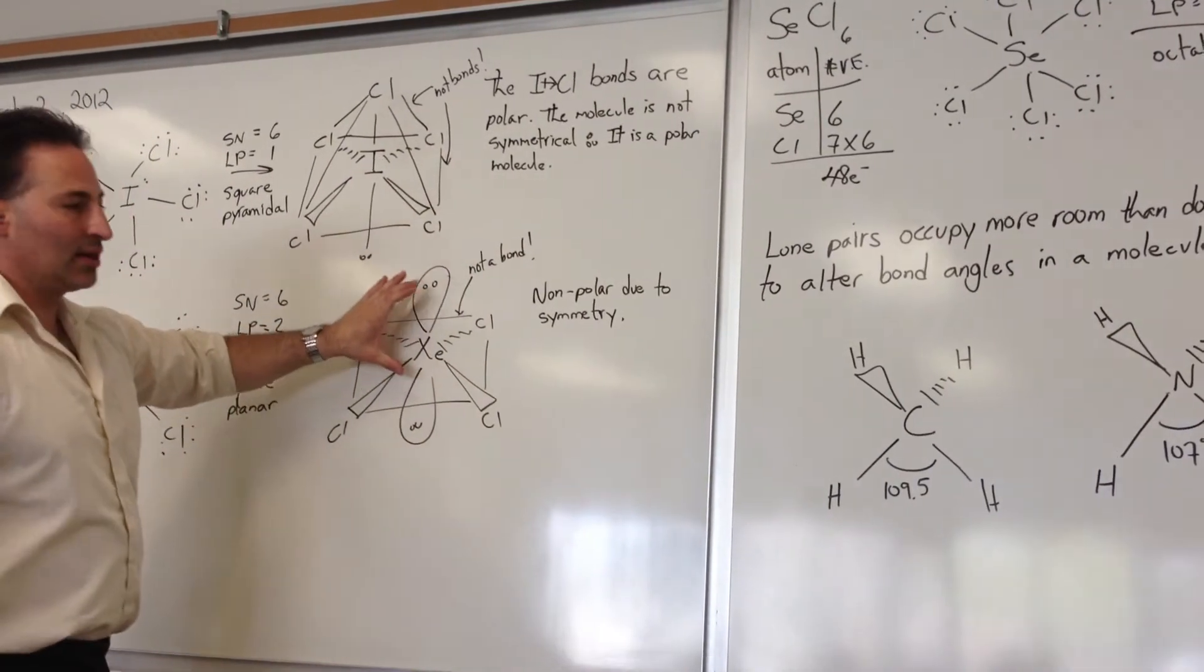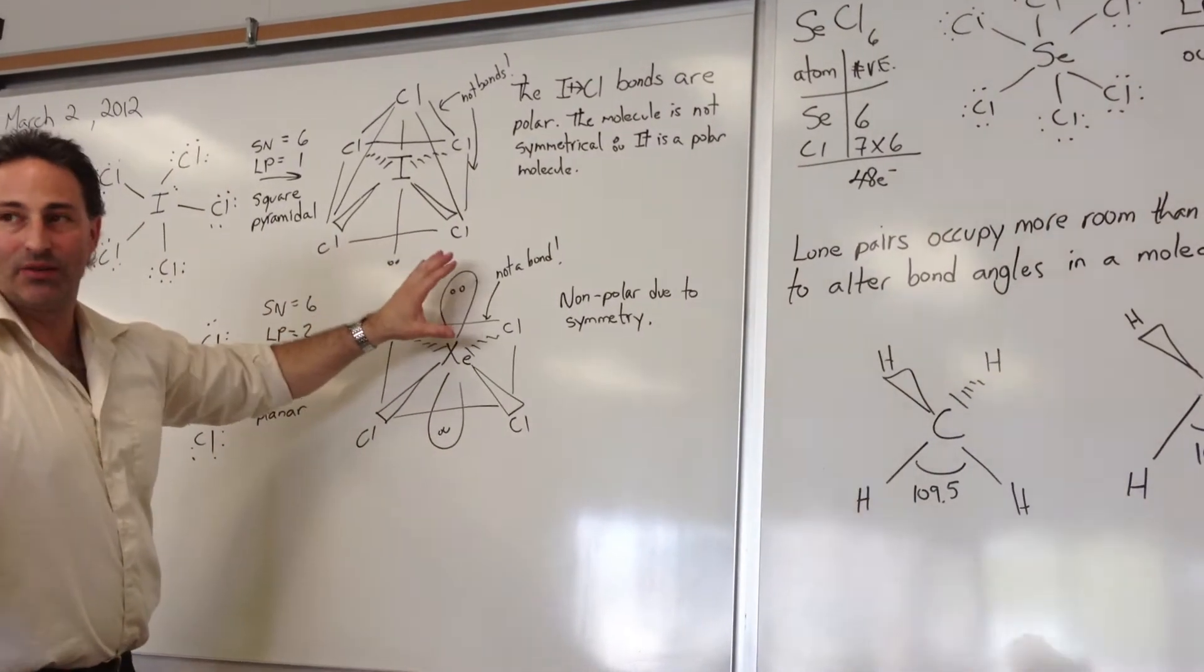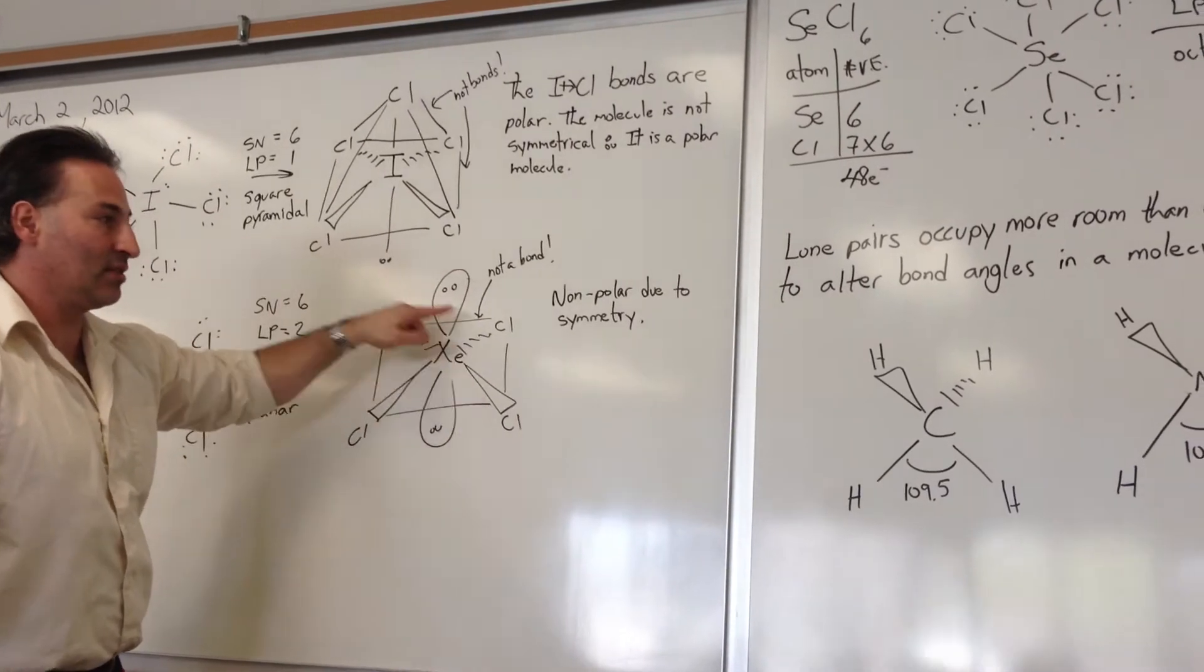So why do the lone pairs appear one above and one below? Because you don't want a lone pair-lone pair interaction at 90 degrees. So the lone pairs will end up one at one end and one at the other end, so they can have a 180-degree angle between them.